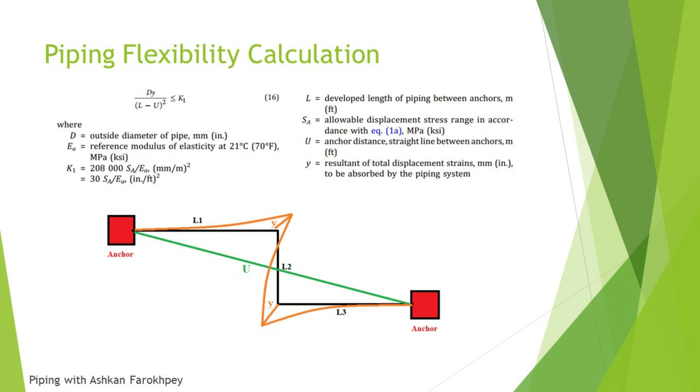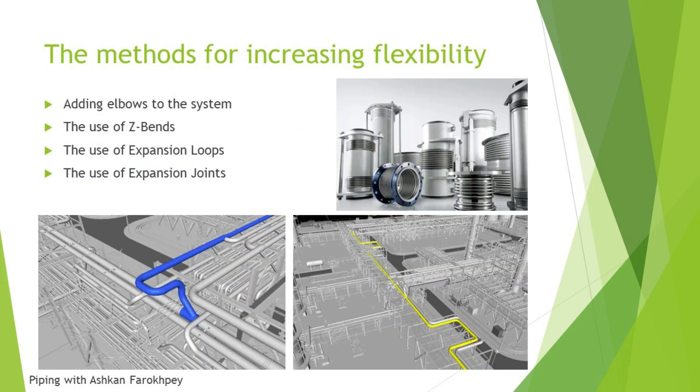Well, in these cases we have to use one of the four methods that I mentioned here. The first one is adding elbows to your system, like for example what you see in the left bottom picture. As you can see, the piping system could be run straight, but for controlling the thermal expansion it is turned and the length of the piping system is changed for controlling thermal expansion.